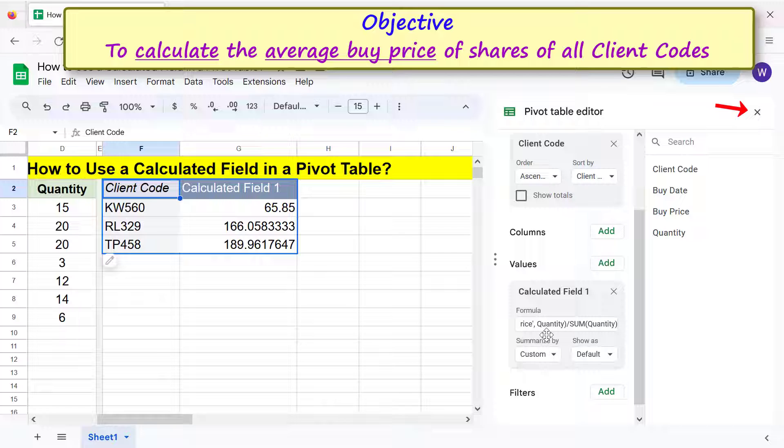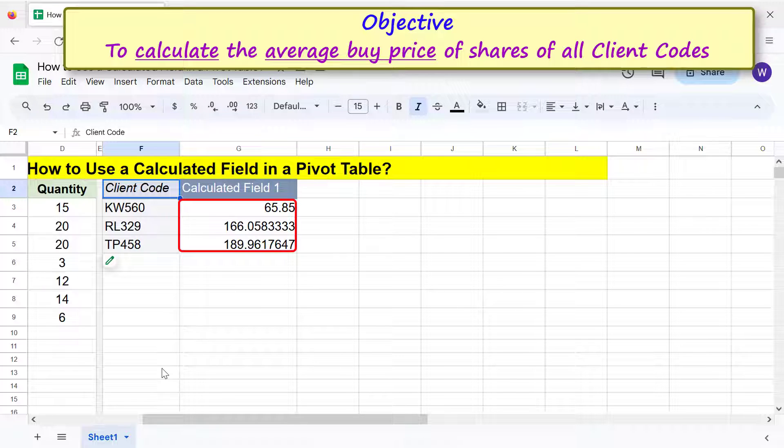Close the pivot table editor. I will set the values to two decimal places, change this title to Average Buy Price, and format the title.